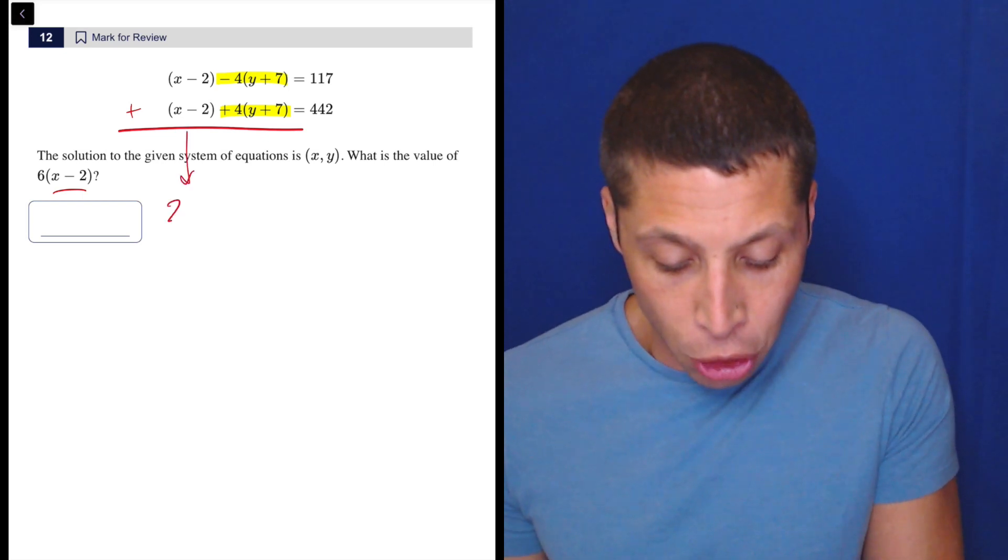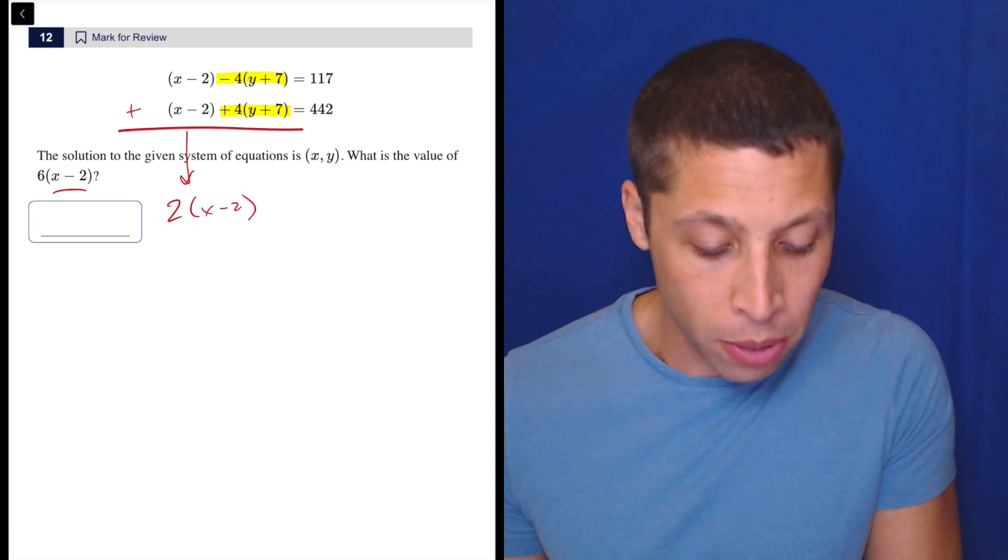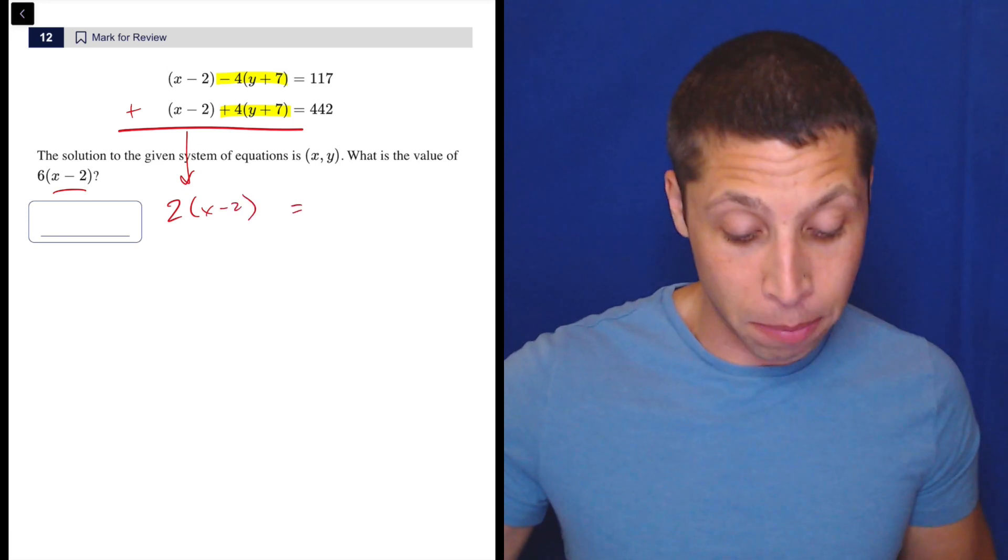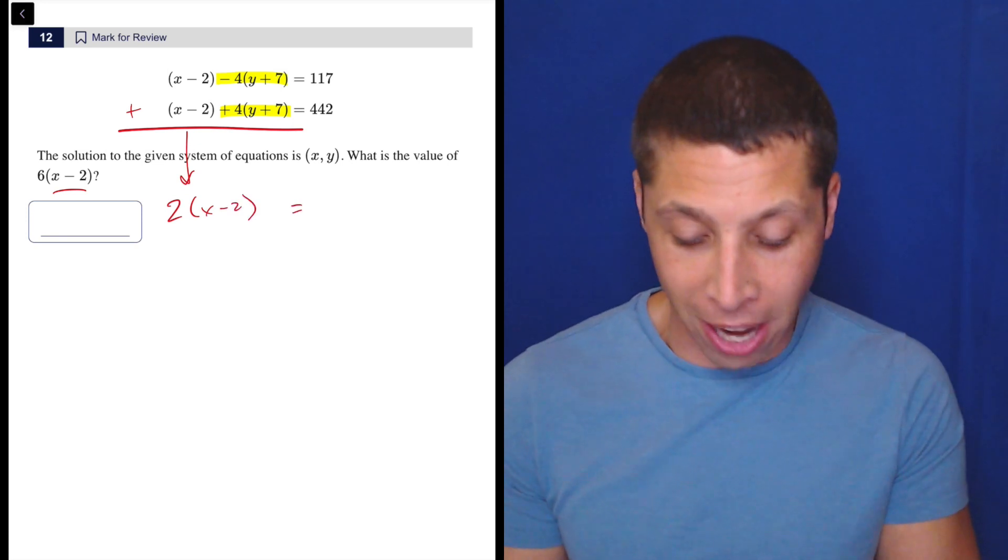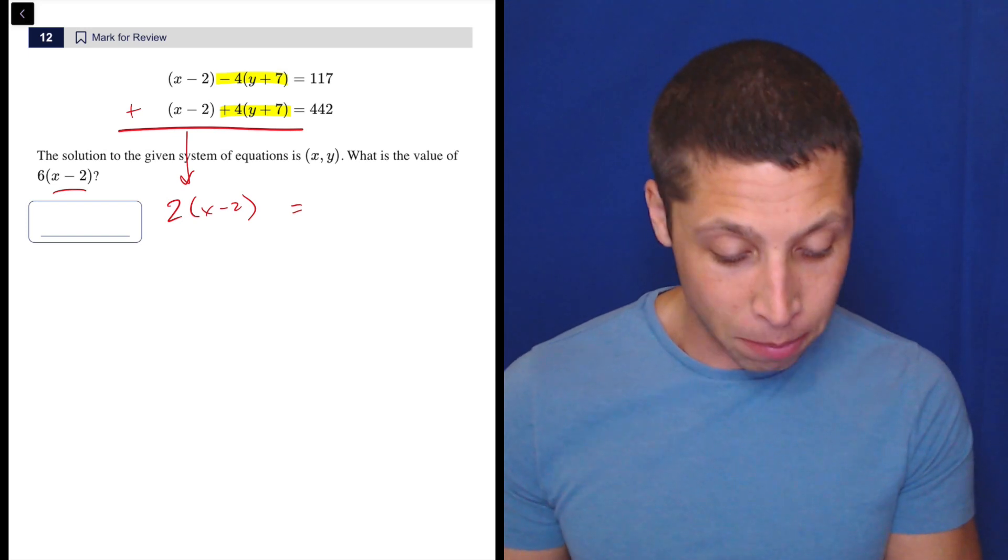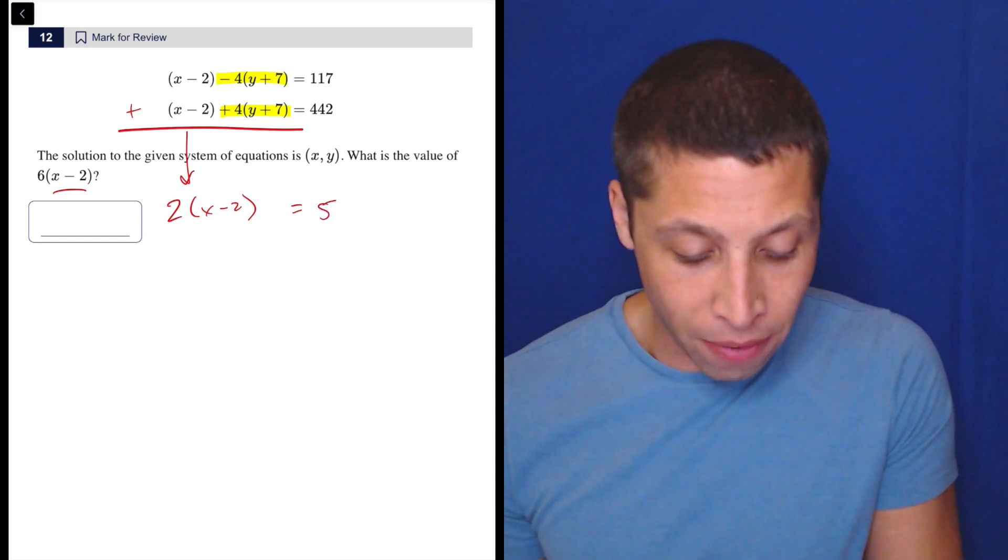Well, 117 plus 442. You're probably reaching for your calculator for that. 117 plus 442 is 559.